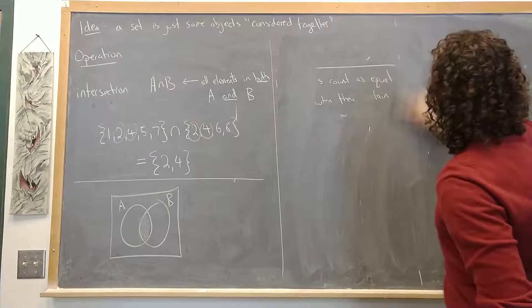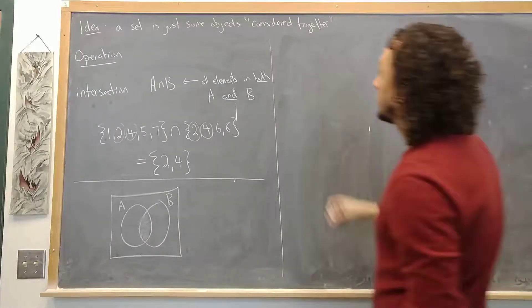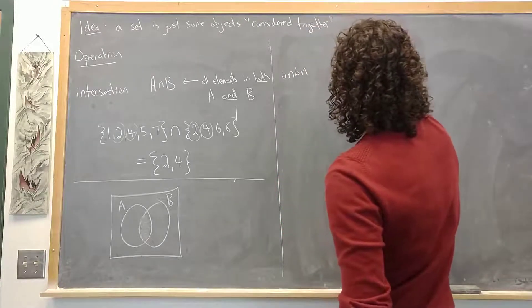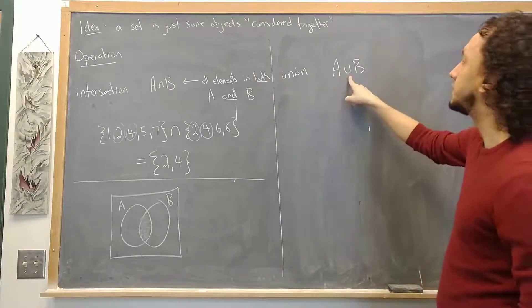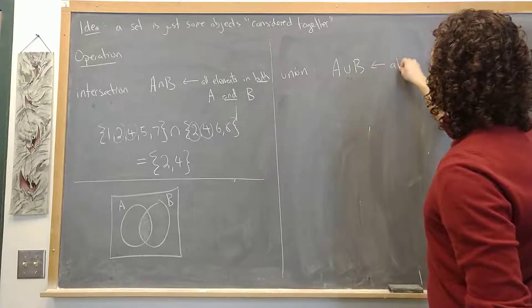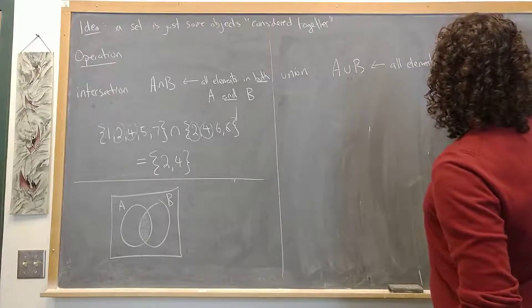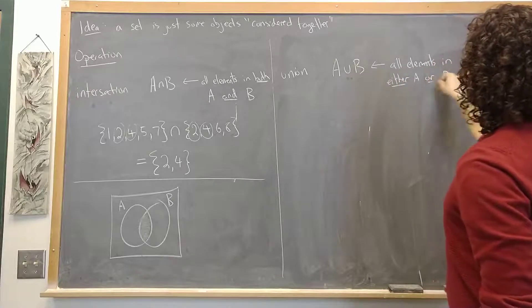And the other operation that I want to introduce you to in this video is called union and that's written A union B, so it's like the upside down symbol from intersection. And this is all elements in either A or B.